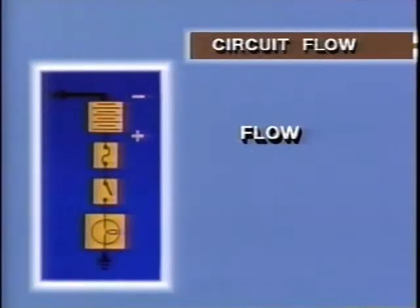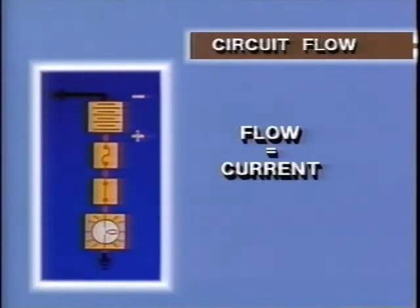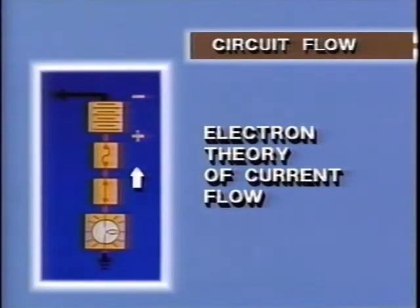Since like charges repel and unlike charges attract, when the switch is closed, like charges repel each other and rush toward unlike charges. When EMF, or voltage, causes electron movement, the result is a flow of electrons. This flow is called current. From a pure design and theoretical view, the electron theory of current flow describes electron flow. Electrons flow from the negative terminal through the circuit to the positive terminal.